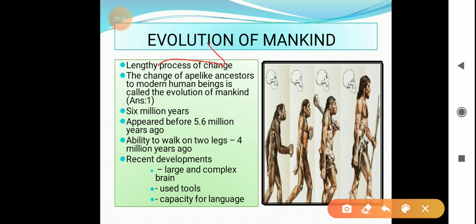The change of ape-like ancestors - ape-like means almost like monkeys - the changes of ape-like ancestors to modern human beings is called the evolution of mankind.